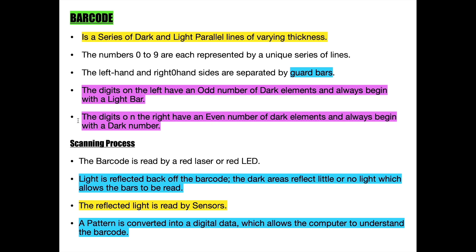The scanning process of a barcode happens within a very short time frame. The barcode is read by a red laser or a red LED in a scanner. Light is reflected back off the barcode; the dark areas reflect little or no light, which allows the bars to be read. The reflected light is read by sensors, and this pattern is converted into digital data, which allows the computer to understand the barcode.